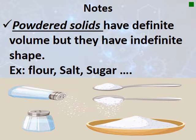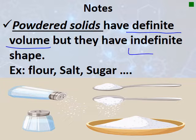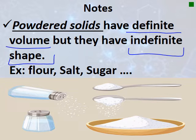Powdered solids are a special example of solids. They have a definite volume but an indefinite shape, because they take the shape of their container. For example, salt or sugar placed in a container takes its shape. So powdered solids are a unique case: definite volume like solids, but indefinite shape.